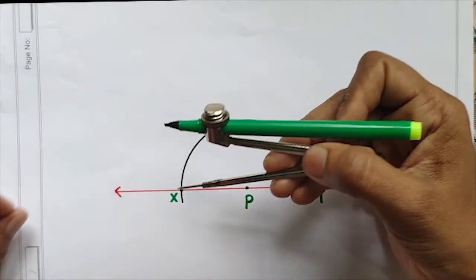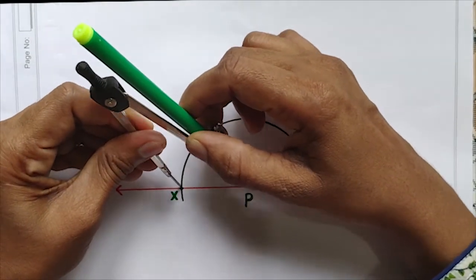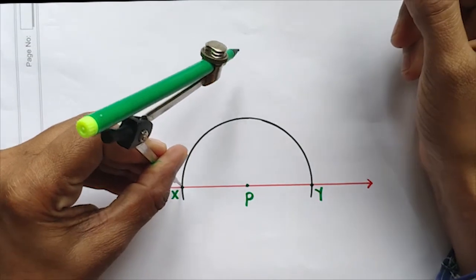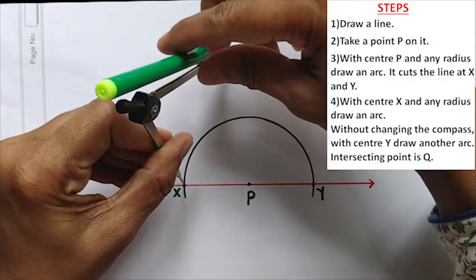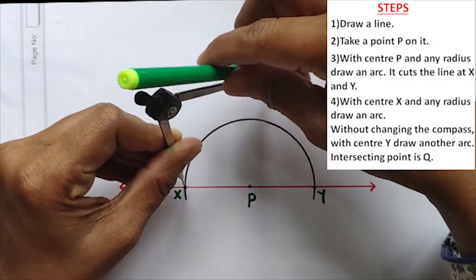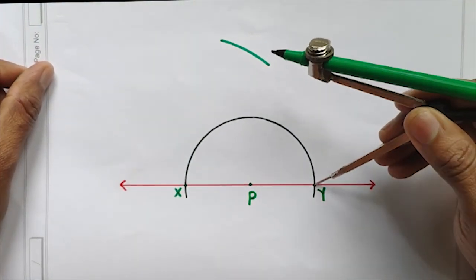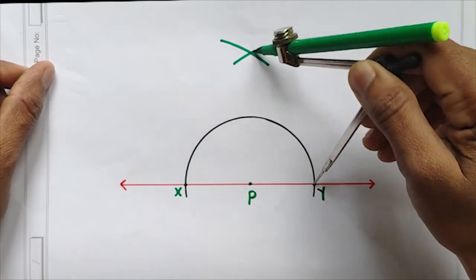With center X, take a little more bigger radius, then draw an arc. Then without changing the compass, with center Y draw one more arc.